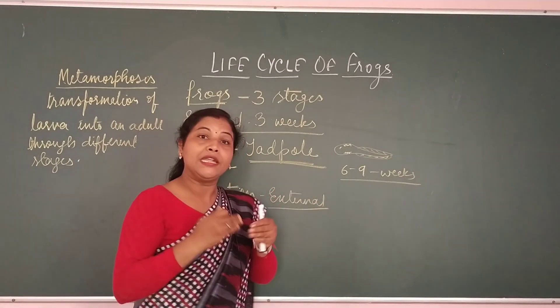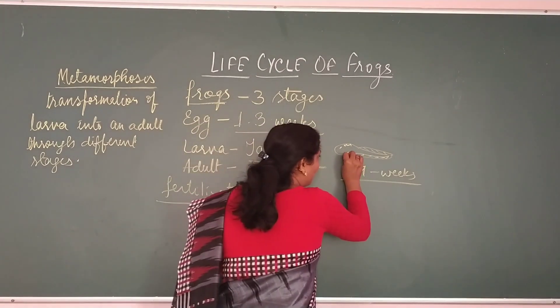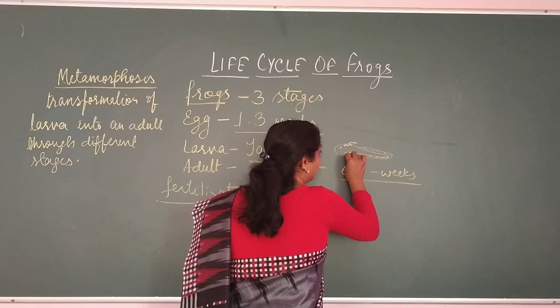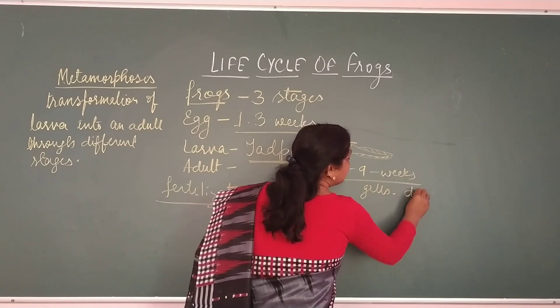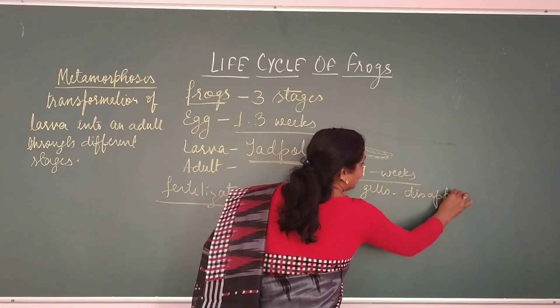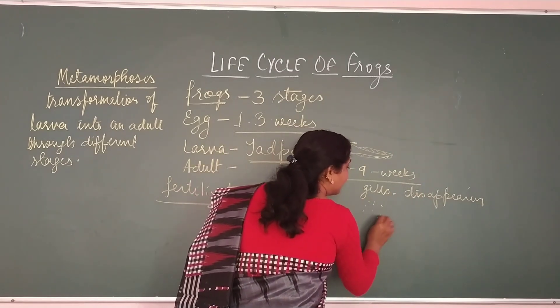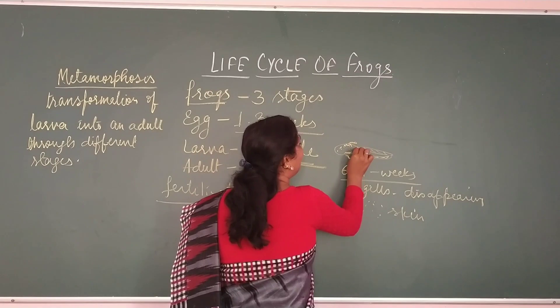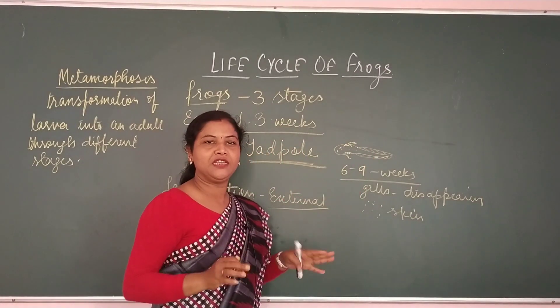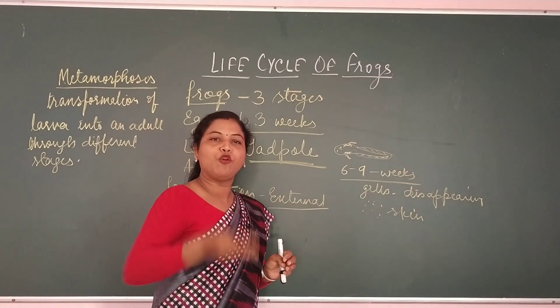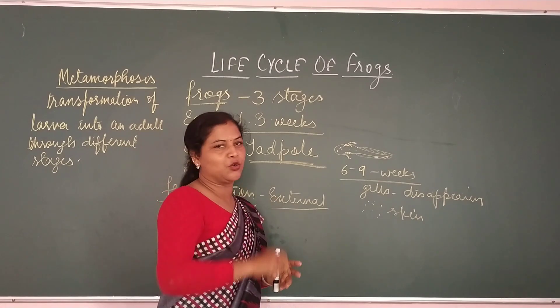Is tadpole mein development start hoota hai. Kya development hoota hai six to nine weeks mein? Inke dheere dheere dho limbs ane shurru hoote hai. Dho pair ane shurru hoote hai. Then inka joh gills hai, wo disappear hoona shurru hoota hai. It starts disappearing. Then they start getting spots on their skin. And between six to nine weeks, they become or they take the formation of very small froggies. Wo bilkul chote se frogs ka roop lelete hain.